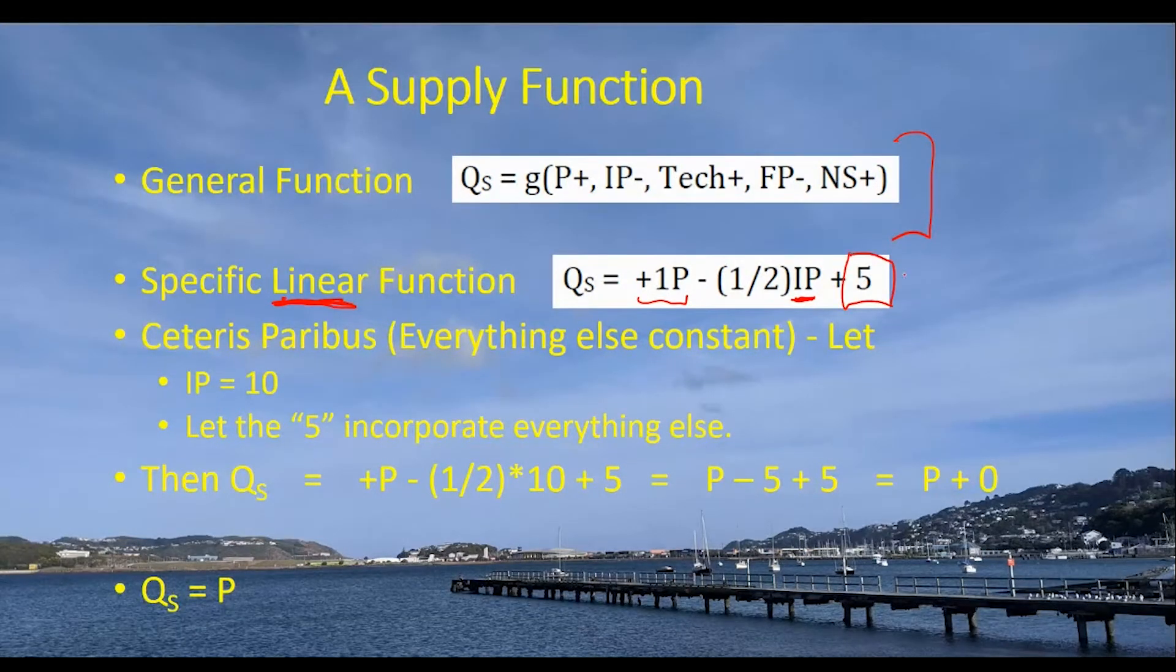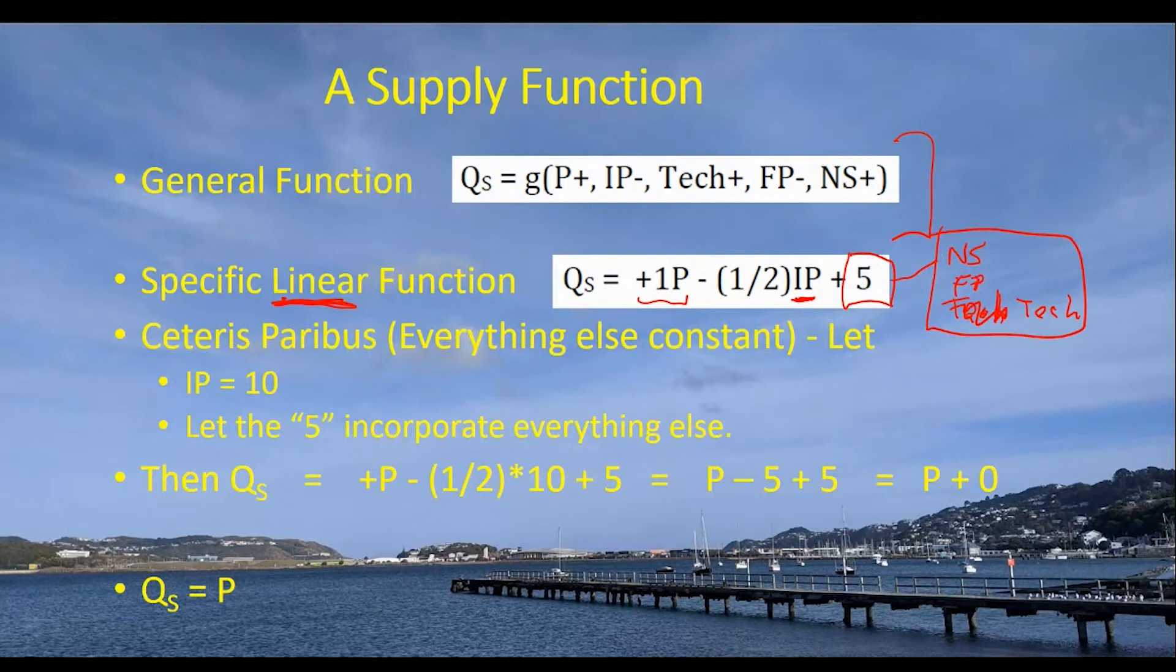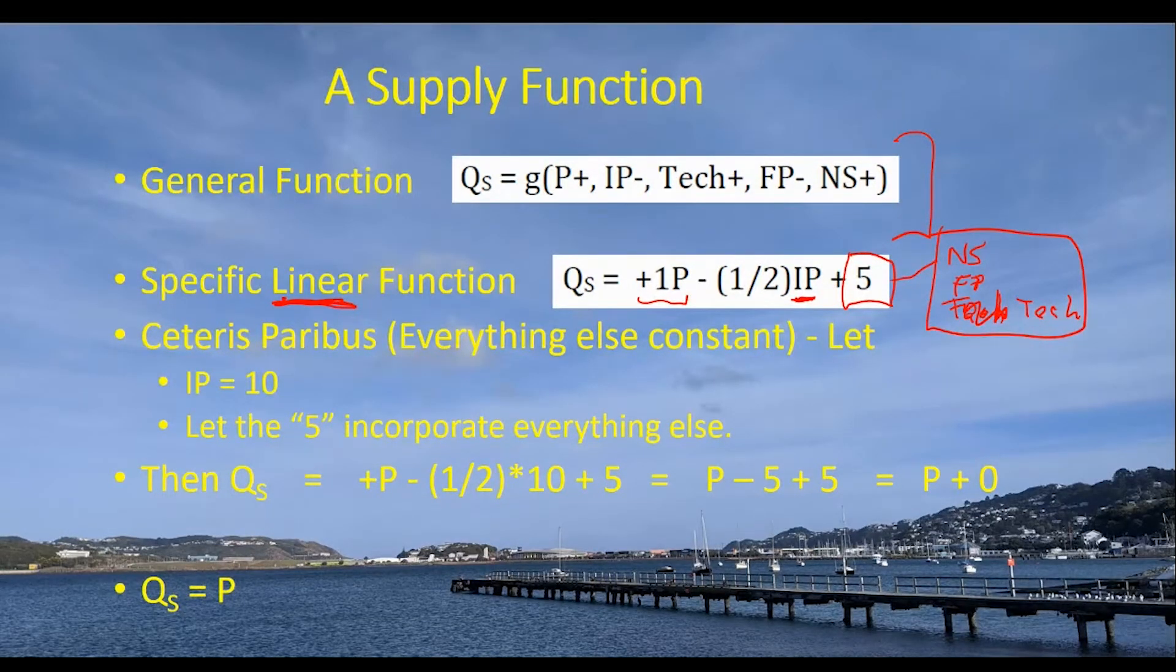And then this five on the right hand side is going to incorporate the number of sellers, future prices, and technology. I didn't explicitly put these down as additional variables in the linear equation. I've just lumped them all together into that intercept term, the number five. So whenever we draw a supply function and you got this nice upward sloping relationship between price and the quantity supplied, we are presuming that ceteris paribus prevails, that everything else has a particular value and is being held constant when we move up and down that particular supply curve.